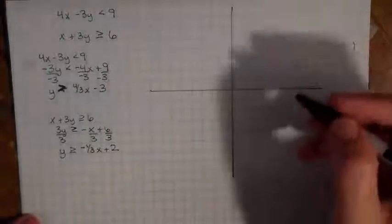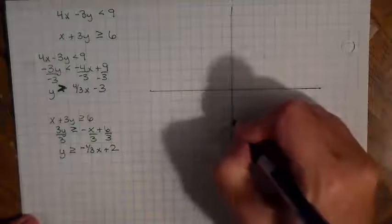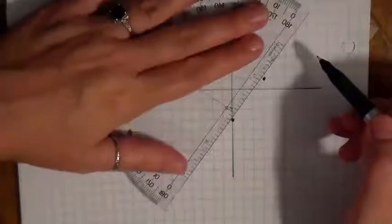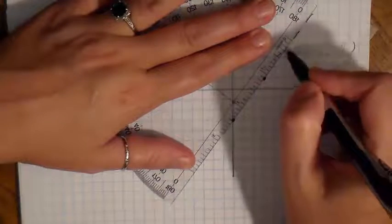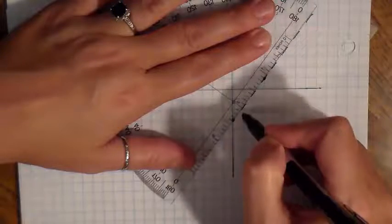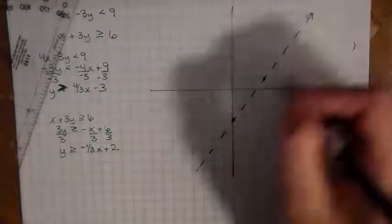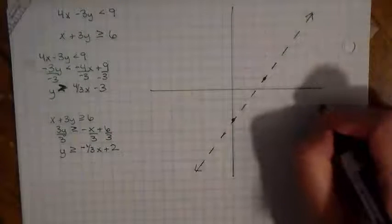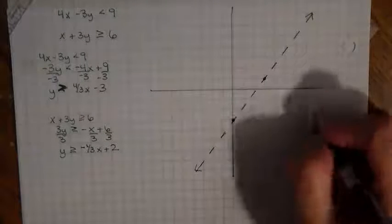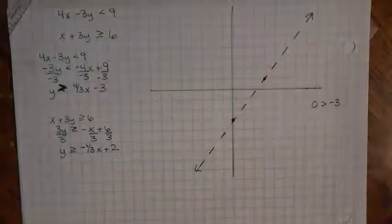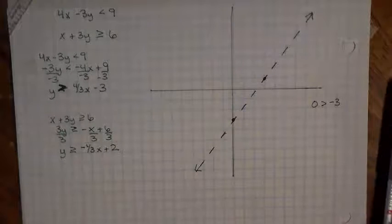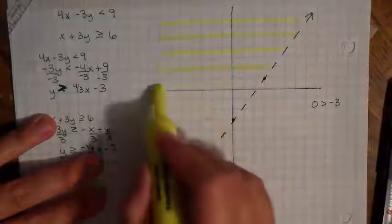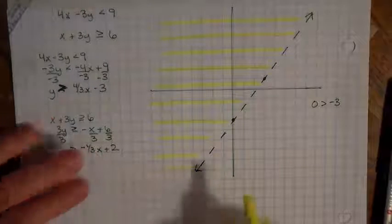I'll graph each of these lines. I start with my negative 3, and my slope is four-thirds so I go up 4 and over 3. This is a greater than, so I need a dashed line. I plug in (0, 0) — you can plug in any point, but (0, 0) is nice because it makes the variables go away — and I get 0 is greater than negative 3, which is true. For the alternative shading method, I draw horizontal lines to indicate the side that would be shaded.